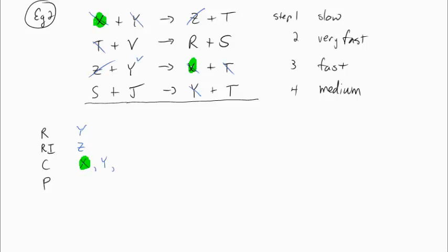Let's have a look. X is used and then remade, that makes them catalysts. Same with Y. Z is produced but then consumed again, that makes it a reaction intermediate. The same for T and S. It's V and J that get used up.